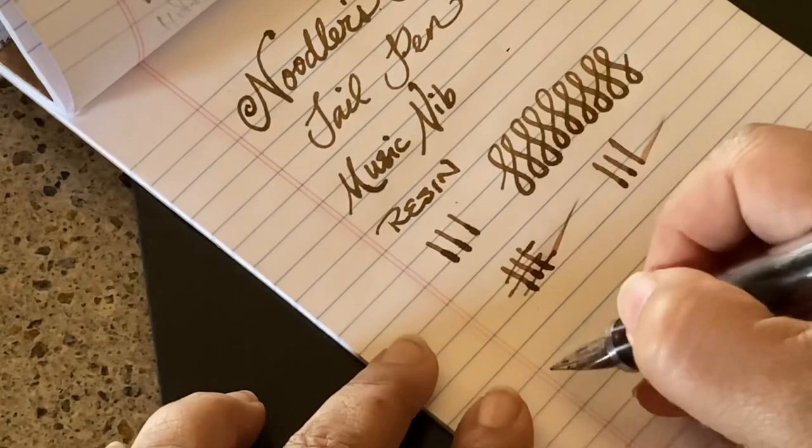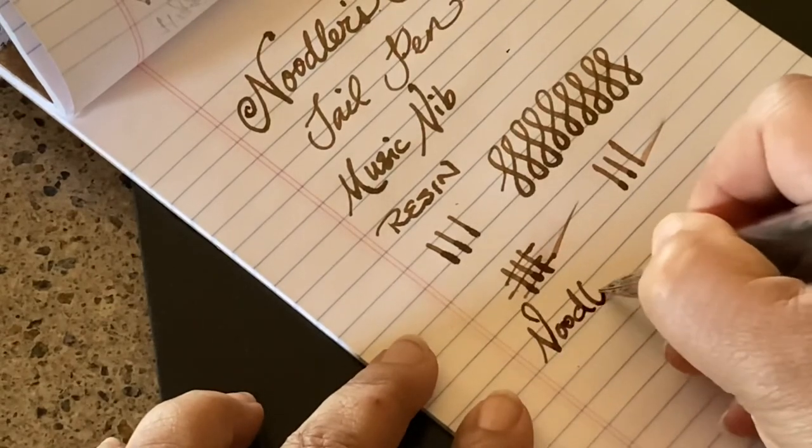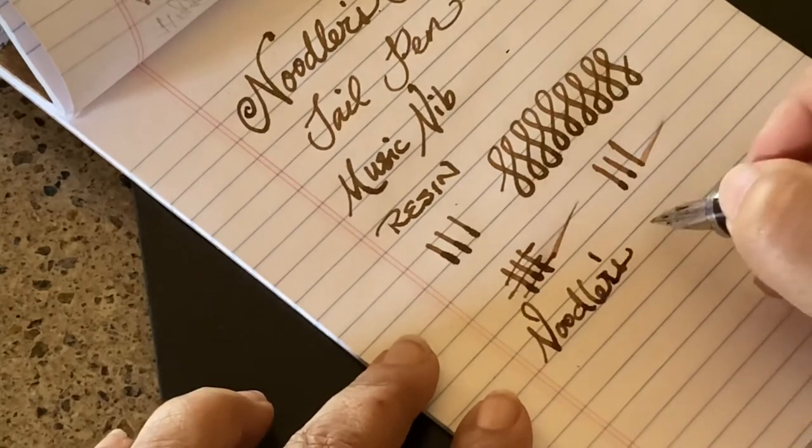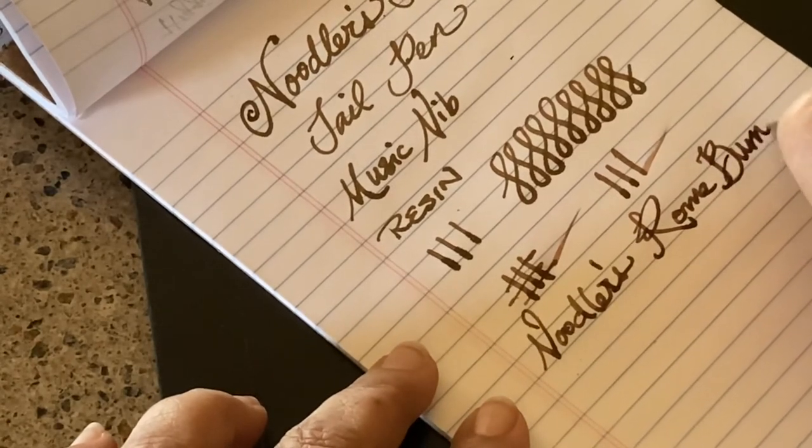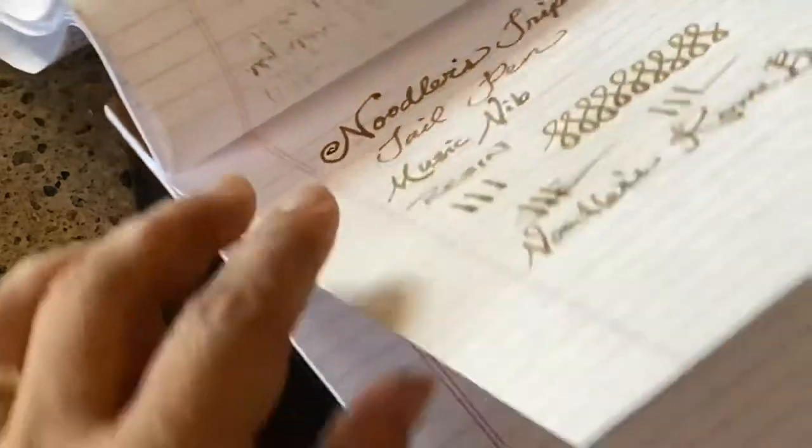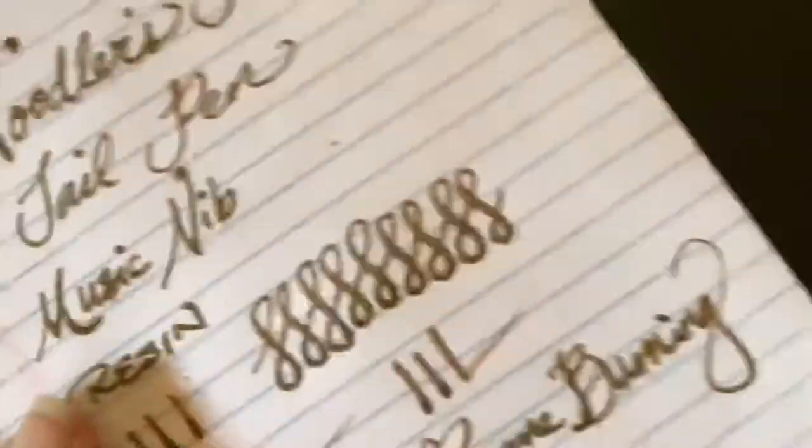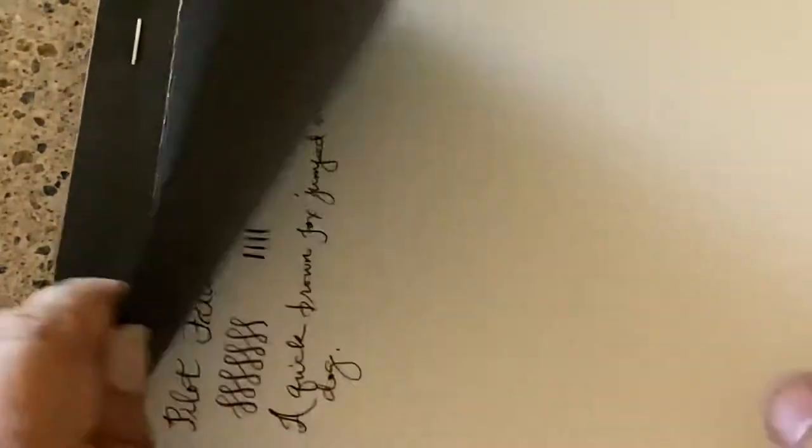So the ink is Noodler's. I mean, I thought that was going to be like a disaster. Go figure. This is why we do a test. Right? Burning. Okay. So while it's not wet there on regular paper, it is almost all the way through. Actually, it is all the way through to the other side. So you probably don't want to use this for like everyday regular stuff. Well, my Pilot was showing through too. Weird. But again, I don't know. Maybe it has something to do with the ink. Who knows?